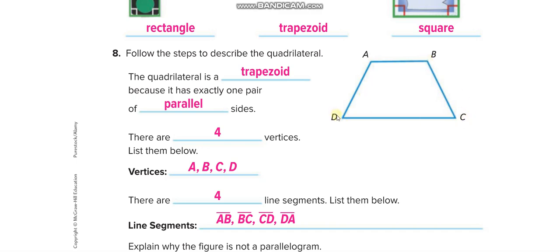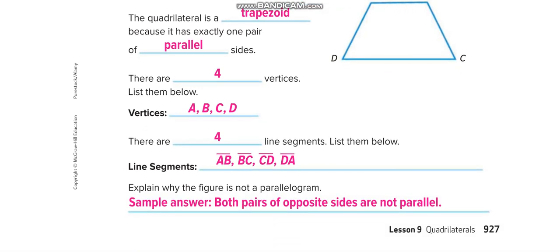A square can also be called a rectangle, parallelogram, or rhombus. This trapezoid has just one pair of parallel sides, four vertices A, B, C, and D, and four line segments: AB, BC, CD, and DA. The figure is not a parallelogram because both pairs of opposite sides are not parallel.